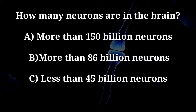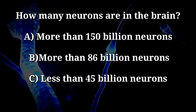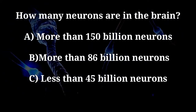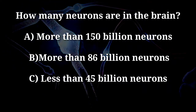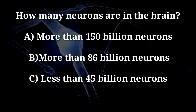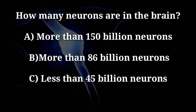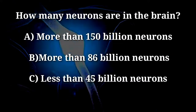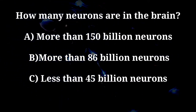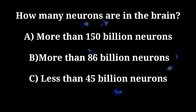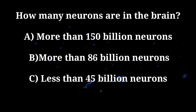How many neurons are in the brain? A. More than 150 billion neurons. B. More than 86 billion neurons. C. Less than 45 billion neurons.